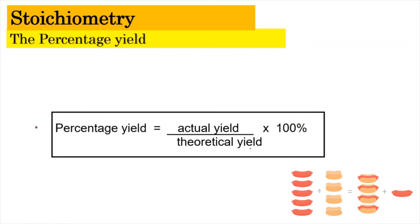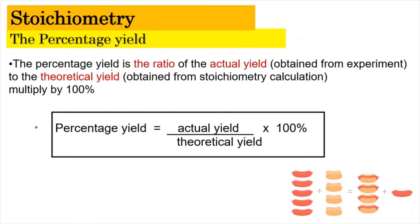Now we move on to a new term: the percentage yield. A percentage yield is the ratio of the actual yield, obtained from the experiment, divided by the theoretical yield, obtained from the stoichiometric calculation, multiplied by 100%. The formula is: percentage yield = (actual yield / theoretical yield) × 100%.